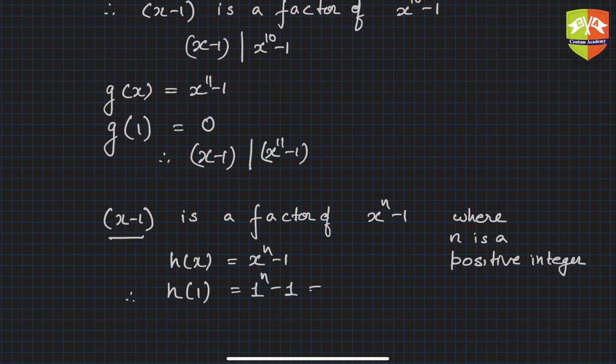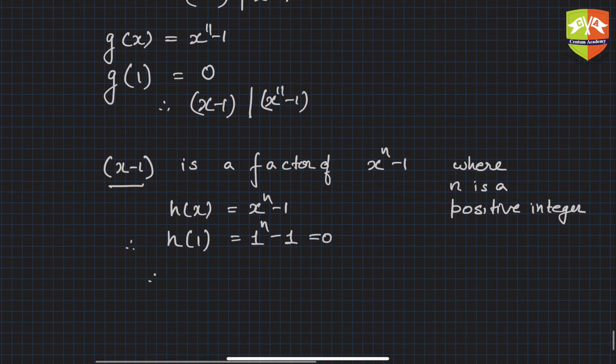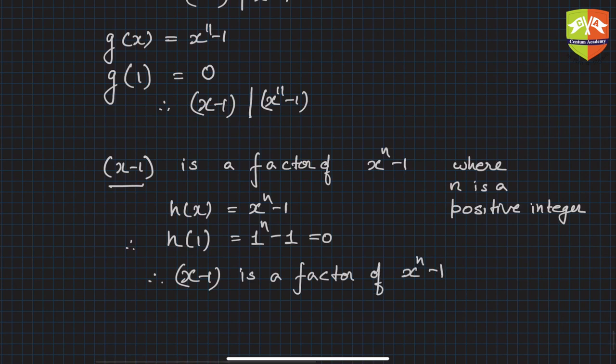Therefore (x - 1) is a factor of (x^n - 1), whatever value, whatever positive integer n could be. So this is the generalized statement.